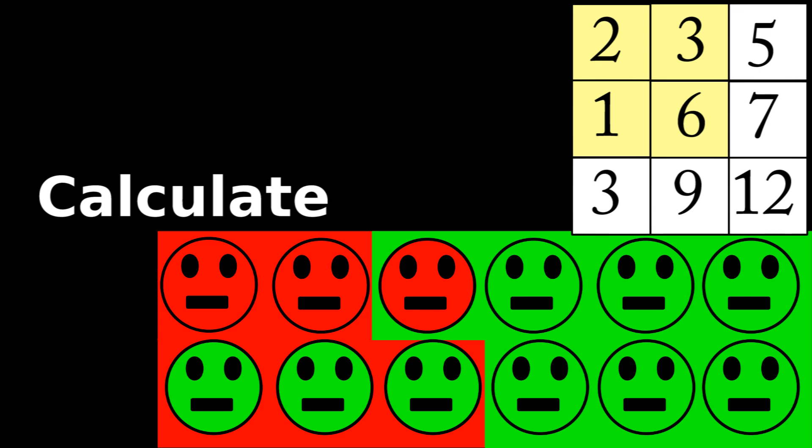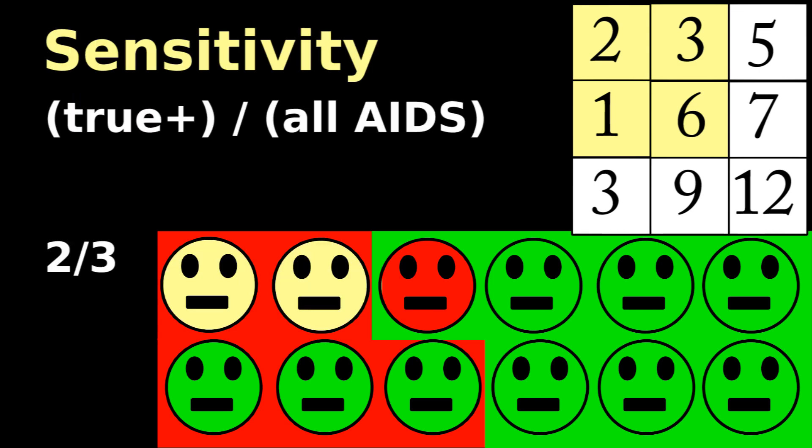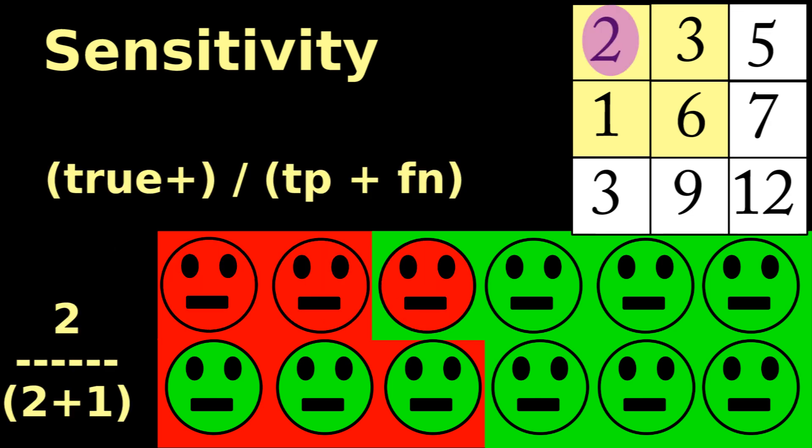Now that you have the chart, you can calculate sensitivity and specificity. Sensitivity is true positives divided by all with AIDS, including those that test missed. Or, true positives divided by true positives plus false negatives.